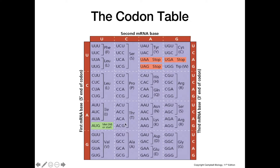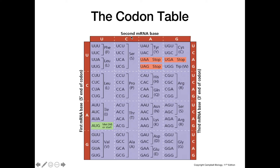Moving on to the codon table: when given a molecule of mRNA, we always read our codons from 5' to 3'. For example, if we have the codon ACU, we take the first nitrogenous base A, then go to the column marked C for the second base, then U for the third base. Finding where they all intersect tells us that ACU encodes for the amino acid threonine.